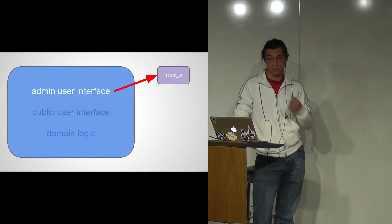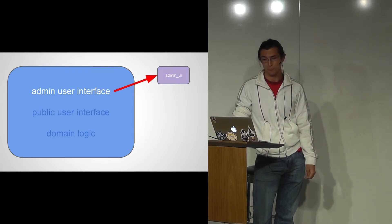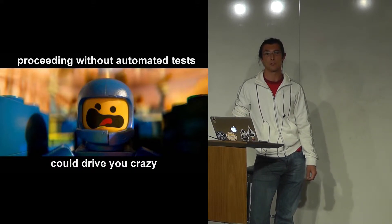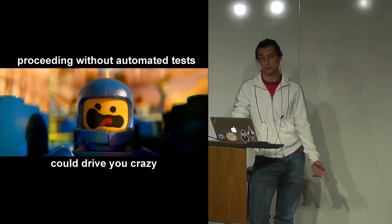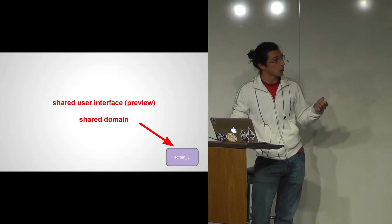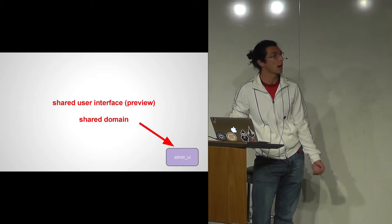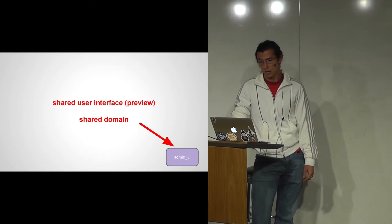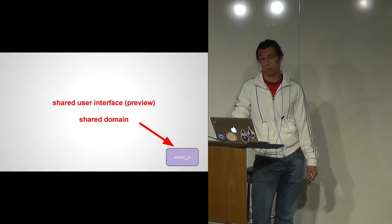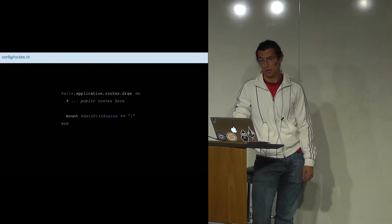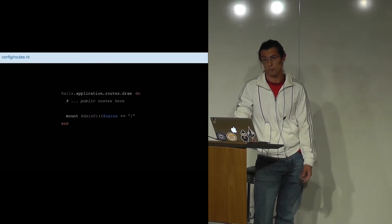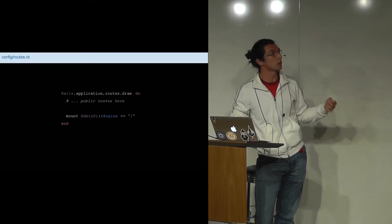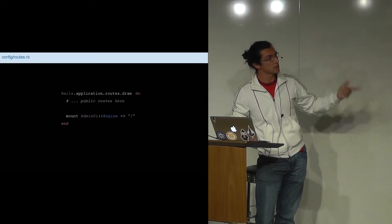The first step was moving the admin-related feature specs from the main app into the engine. Proceeding without tests could drive you crazy — everything I've done here was on a non-greenfield application, so I moved my specs first and drove all the refactoring through those. I identified shared user interface elements for previews shared by admin and the public-facing path, as well as shared domain logic. To reduce the initial scope, I put all that inside the admin-UI engine, which is now required by the config routes — an interim state where the app mounts the admin-UI engine.